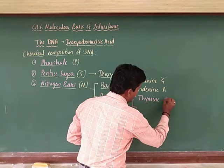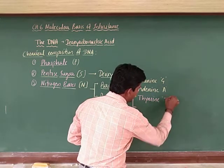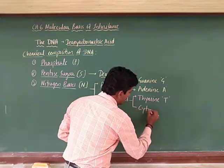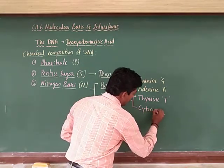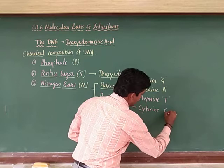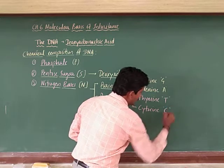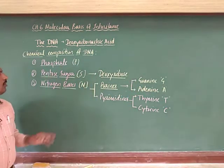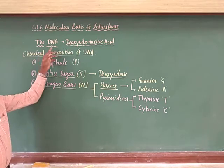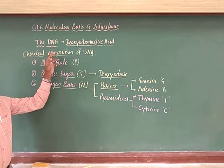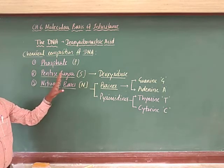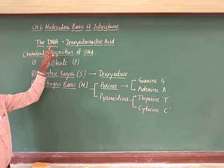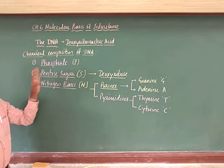Thymine is indicated by T and cytosine by C. This is the chemical composition of DNA.